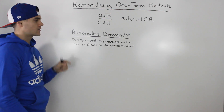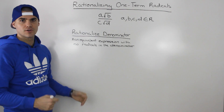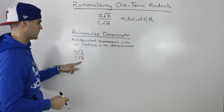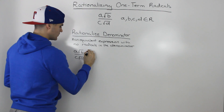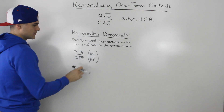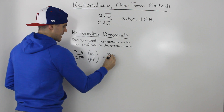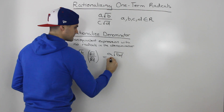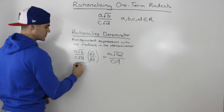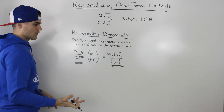Usually you'll be asked to rationalize the denominator, which means you're taking this radical and creating an equivalent expression with no radicals in the denominator. So if we take our general expression, what we want to do is get rid of this root d in the denominator. You multiply it by root d over root d — that's multiplying by one, so it's the same expression. When we multiply this out, we get a root b times root d, which is just root bd, over c, and root d times root d gives us just d by itself. Notice how the two expressions are equivalent, but now there are no radicals left in the denominator.